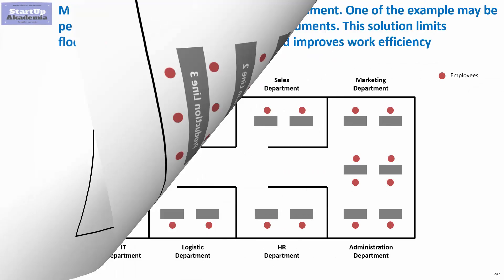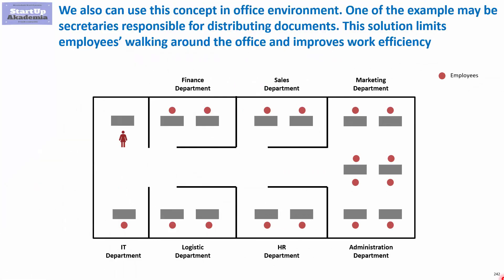This can also be used in an office setting. Here we have an assistant who wants to deliver documents to different departments. He doesn't try to guess which departments to visit — he simply follows a pre-planned route two or three times a day, delivering documents as needed to specific places.